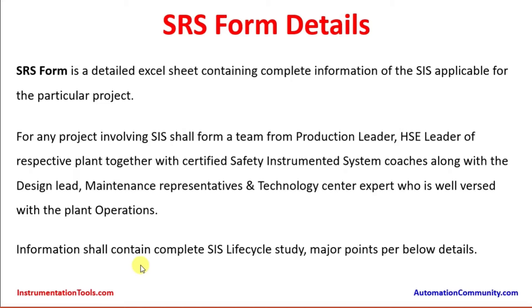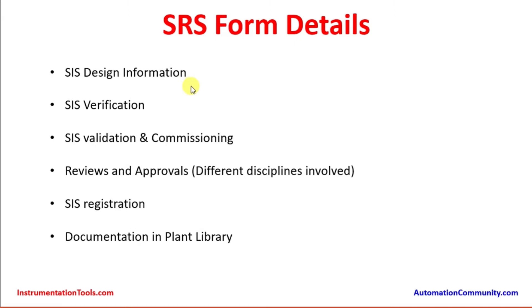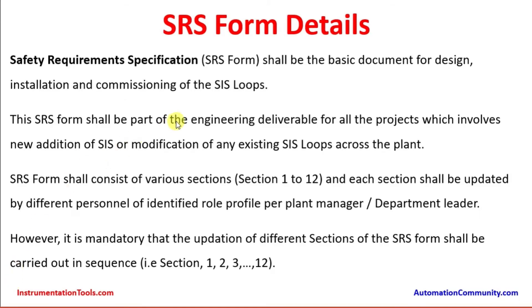The SRS form information shall contain a complete SIS life cycle study covering: SIS design information, SIS verification, SIS validation and commissioning, reviews and approvals, disciplines involved, SIS registration, and documentation in the plant library. The safety requirement specification form shall be the basic document for design, installation and commissioning of the SIS loops, and shall be part of the engineering deliverable for all projects which involve new addition of SIS or modification of any existing SIS loops across the plant.